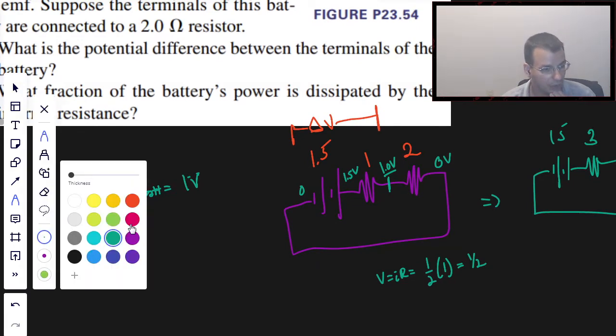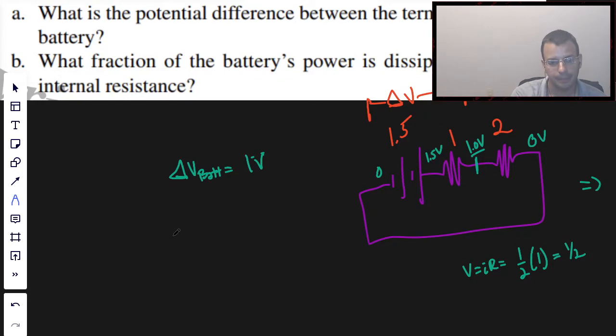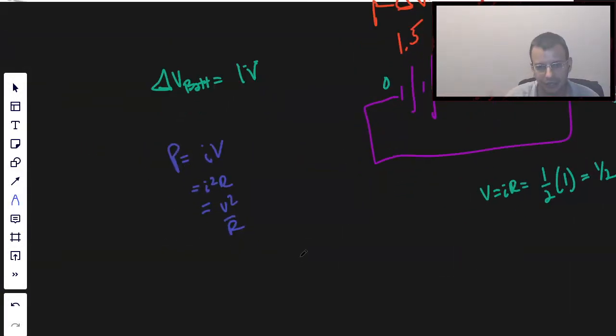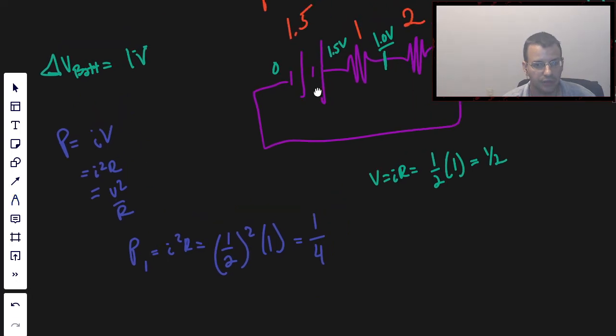So now they want to know the power dissipated by the internal resistance. Power has different formulas: power equals IV, I squared R, and V squared over R. I is 0.5 amps, so I'm going to use I squared R. The math will be the same because we know everything. Power is I squared R. Current is 0.5, so it's 0.5 squared times the resistance, which is 1. So the power dissipated is 0.25 watts for the first resistor.